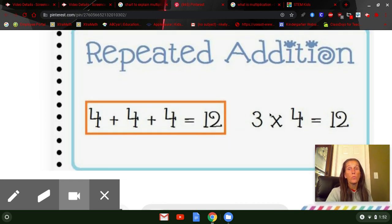And this is called repeated addition. So again, instead of adding up four three times, it's just quicker to say three times four. The answer is going to be the same. Whether we added up four three times or we said three times four, the answer would be 12 either way.